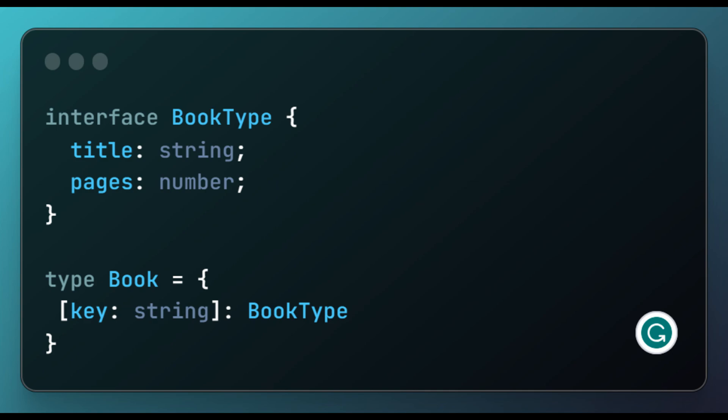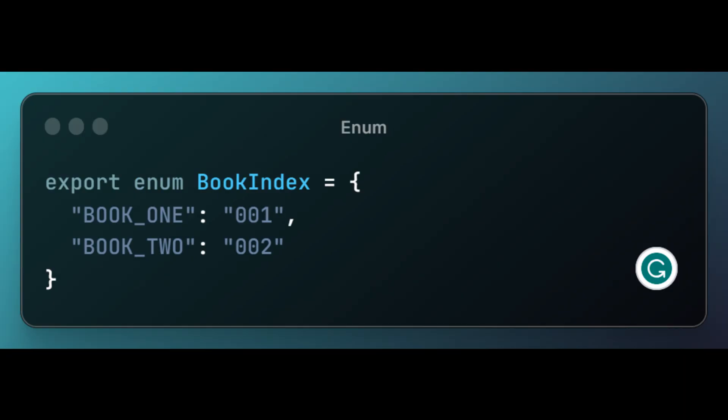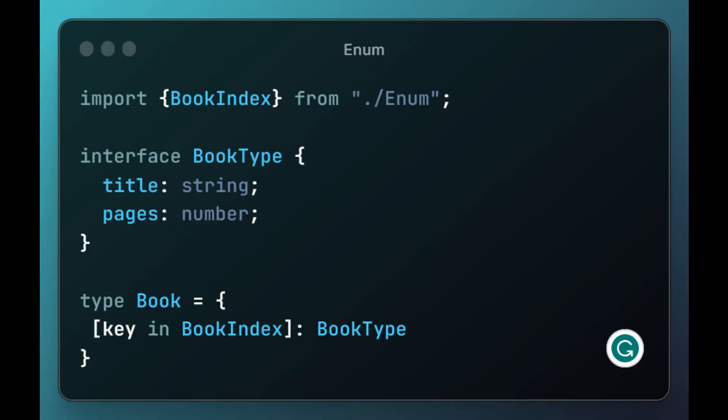The type we have above tells the TypeScript compiler that any object of type book should have a key which is a string, and the value for the key should be an object of book type. The key string index allows us to use any string value as the key. We can also put a constraint on the values we expect as keys for the book dictionary by specifying a union type for which values serve as keys.